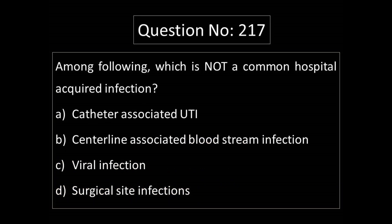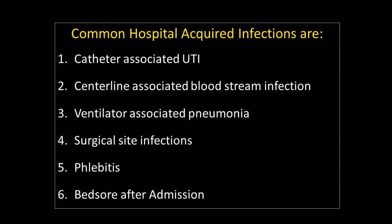Question No. 218. Among the following, which is NOT a common hospital-acquired infection? Option A: Catheter-associated urinary tract infection. Option B: Central line-associated bloodstream infection. Option C: Viral infection. Option D: Surgical site infections. Common hospital-acquired infections include: catheter-associated UTI, central line-associated bloodstream infection, ventilator-associated pneumonia, surgical site infections, phlebitis, and bed sore after admission. The answer is Option C: Viral infection.